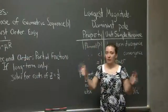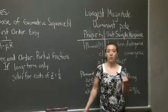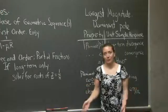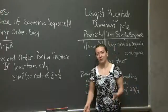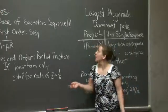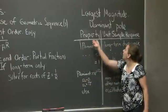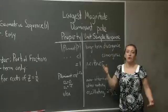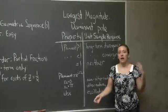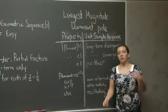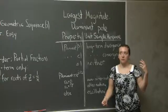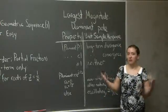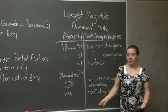So now we know how to find the pole, or multiple poles, if we're interested in multiple poles. The first thing you do is look at the magnitude of all the poles that you solved for and select the poles with the largest magnitude. If there are multiple poles with the same magnitude, then you'll end up looking at all of them.